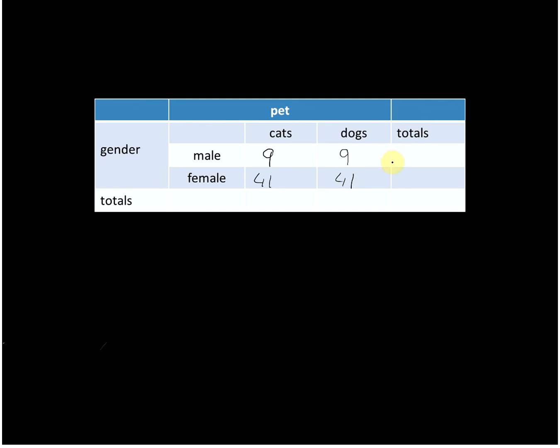We can also do the total numbers. We have 18 males and 82 women. For the cat lovers we can do the calculation in this direction: 9 plus 41, that's 50, and 9 plus 41, that's 50 dog lovers. The total we can calculate in this direction or in this direction and it should give us the same number: 50 and 50 gives 100, 18 plus 82 also gives 100. That's our total number of people who we asked, and these are the expected values if men and women don't have any preference.